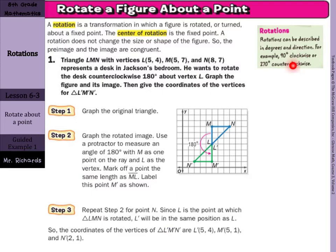Triangle LMN with vertices L(5,4), M(5,7), and N(8,7) represents a desk in Jackson's bedroom. He wants to rotate the desk 180 degrees counterclockwise about vertex L. Graph the figure and its image. Then give the coordinates of the vertices for triangle L prime, M prime, N prime. Step one, graph the original image. There it is. Now, one way of doing this is to graph the rotated image by using a protractor to measure an angle of 180 degrees with M as one point on the ray and L as the vertex. Mark off a point the same length as ML.